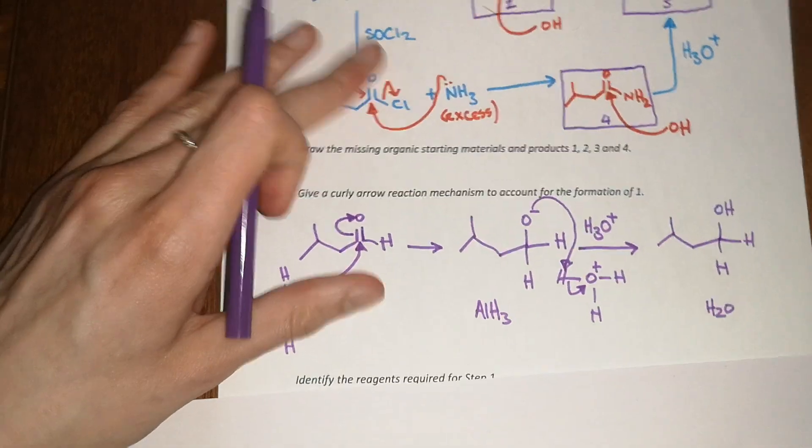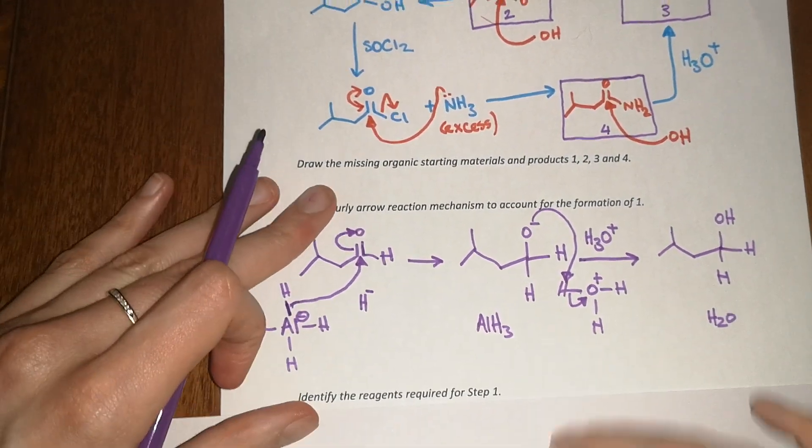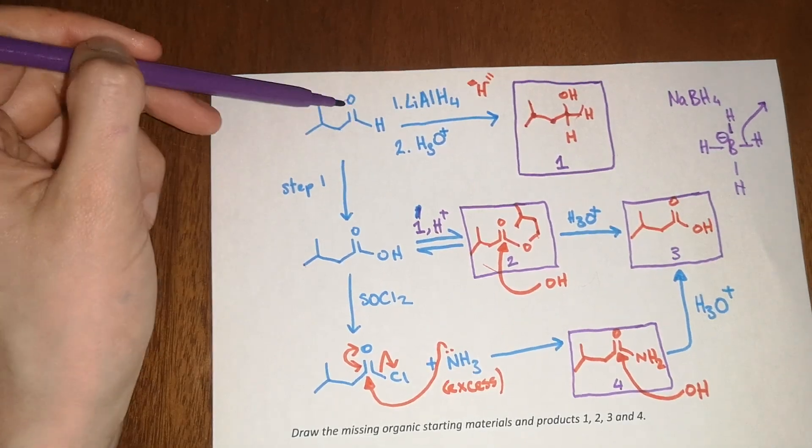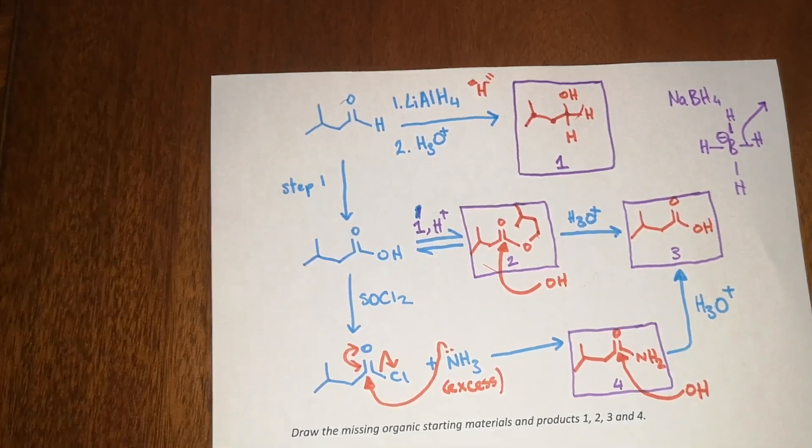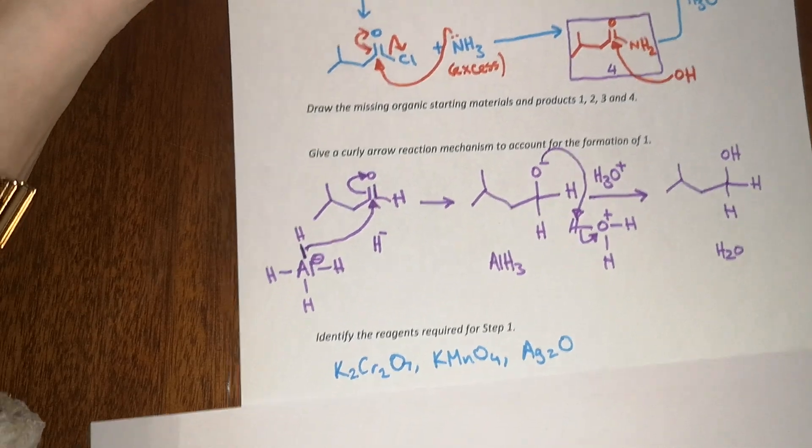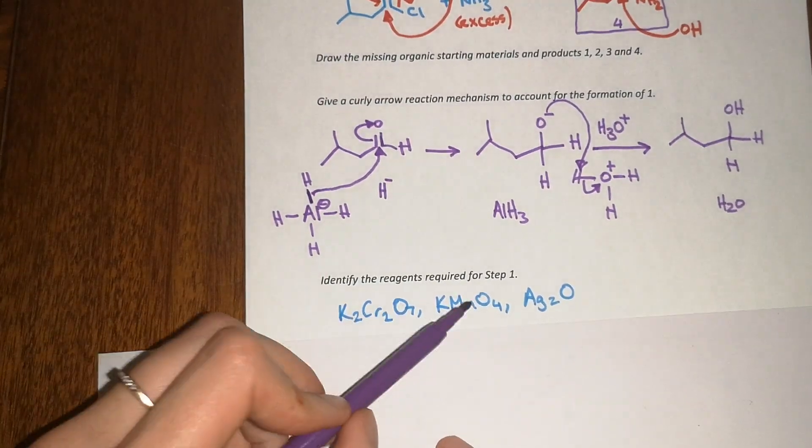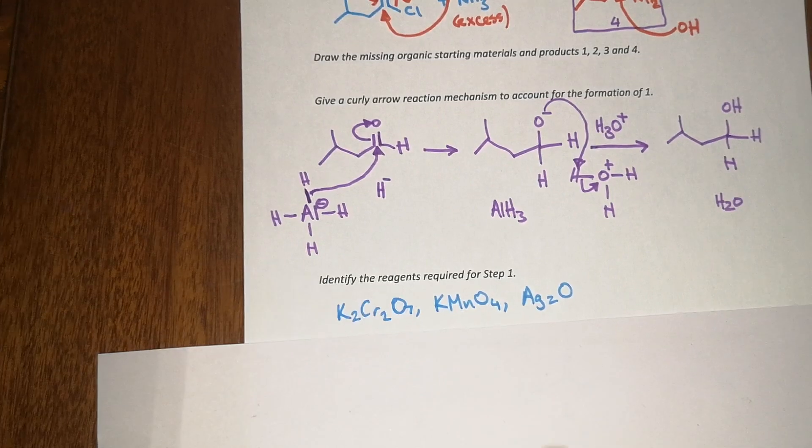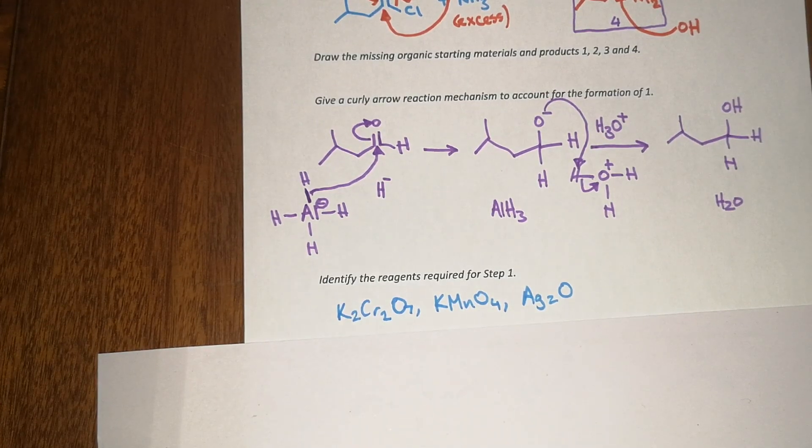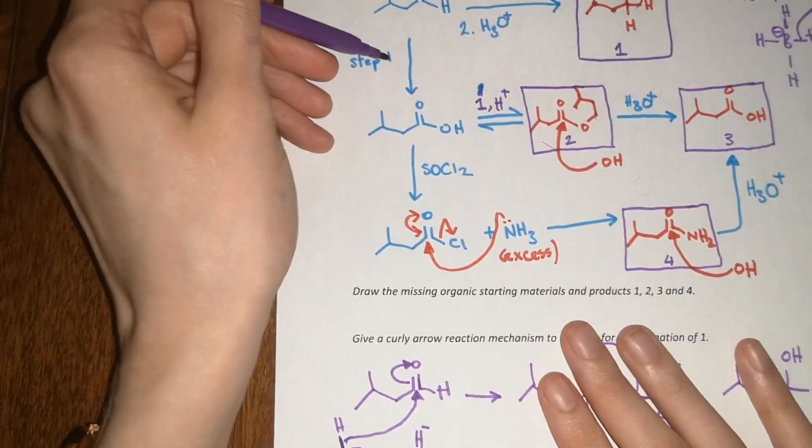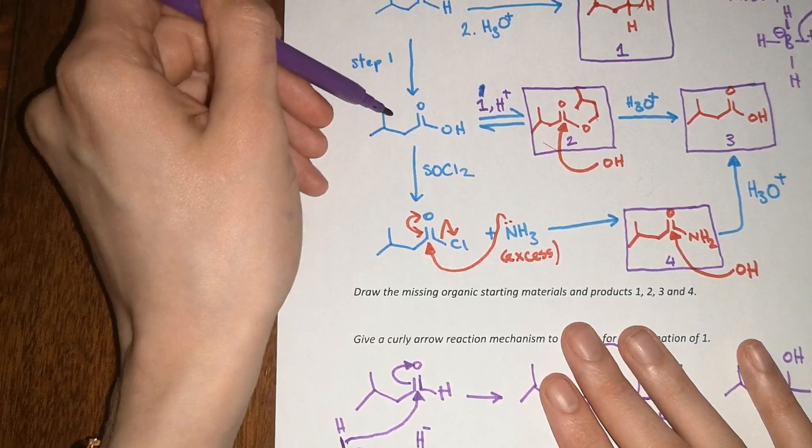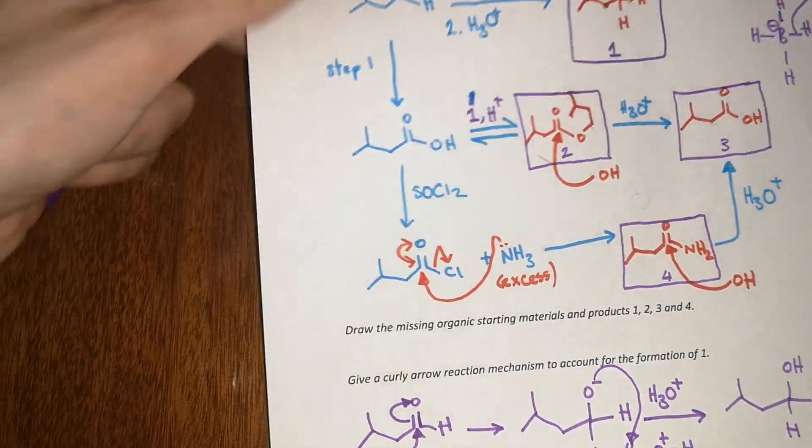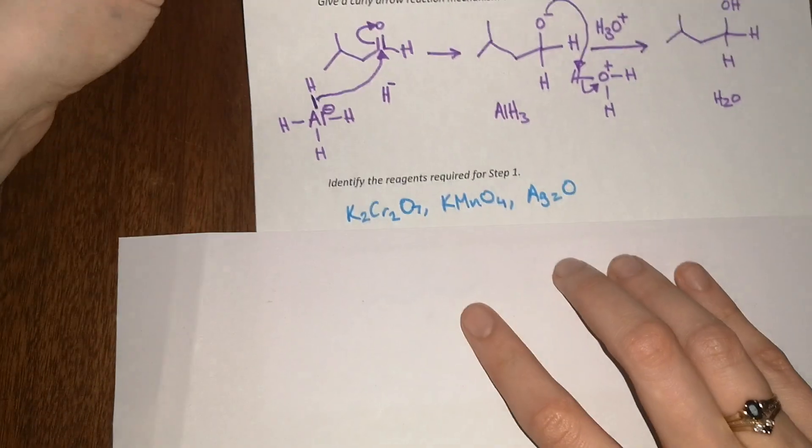The next question is: identify reagents required for step one. Step one is the oxidation of an aldehyde to a carboxylic acid. There's a load of different reagents you could choose - I've just written some out here. You can use chromium reagents, potassium permanganate, silver oxide - there's a load of different oxidizing reagents out there. I would advise you to just make sure you look at all the ones that are in your lecture notes and be aware of all of them, because you might get a question where you're not asked for the reagents, the reagents are provided for you but you have to identify the product. You definitely want to be familiar with all of the oxidizing agents that you see in the module.